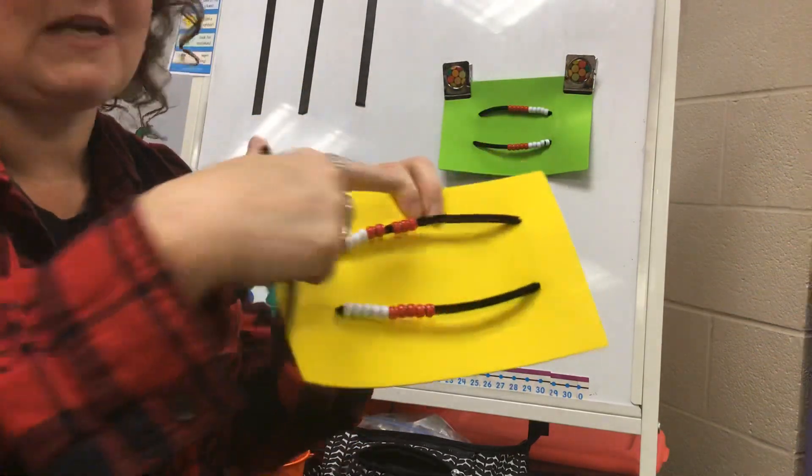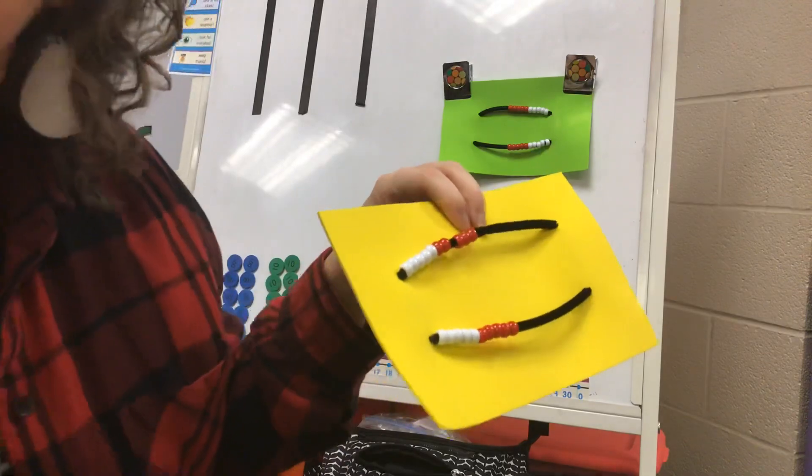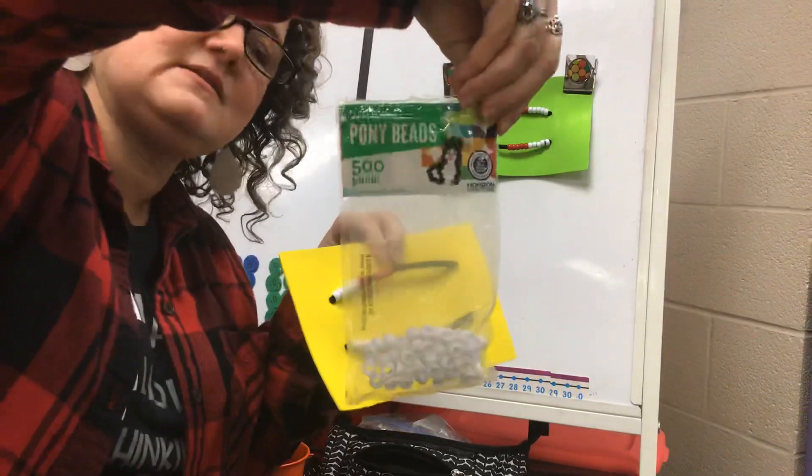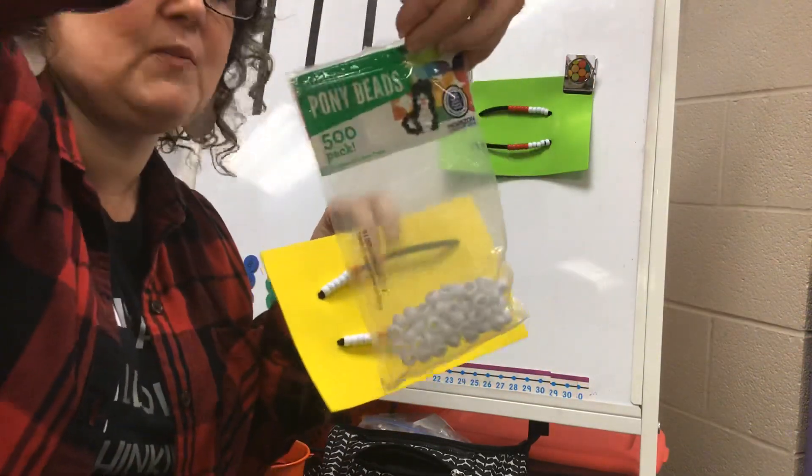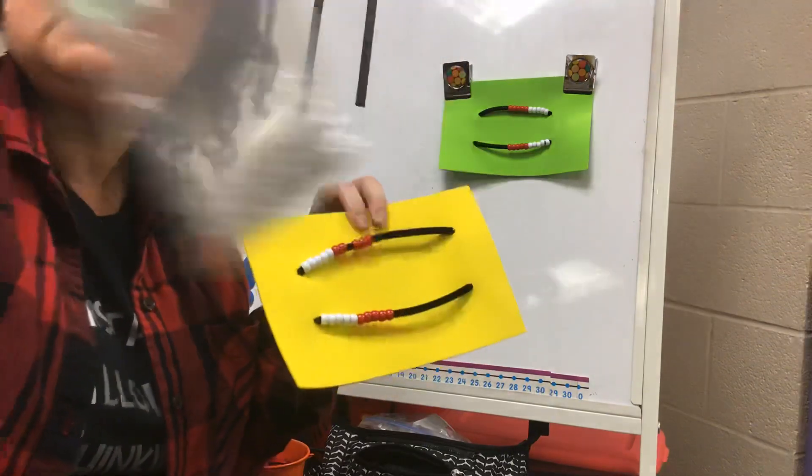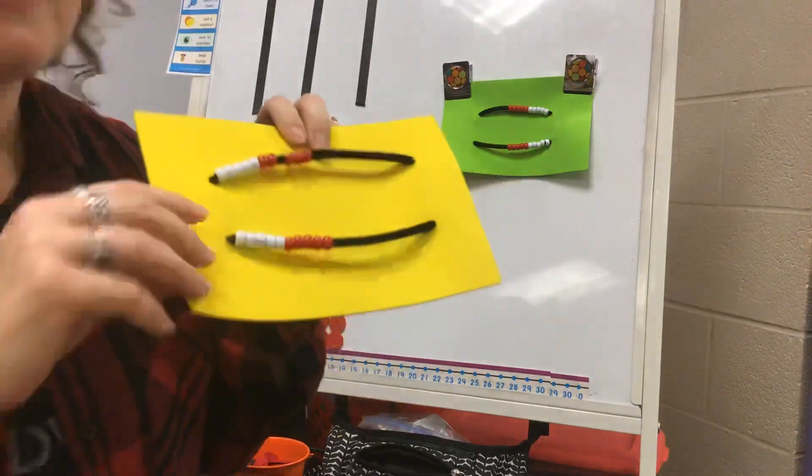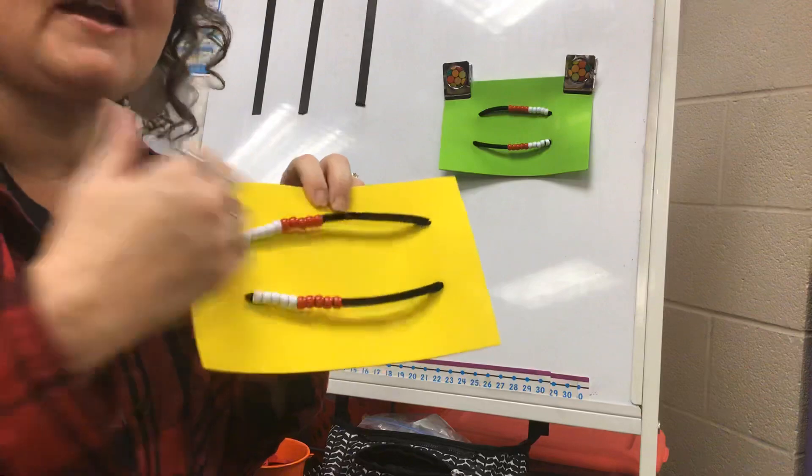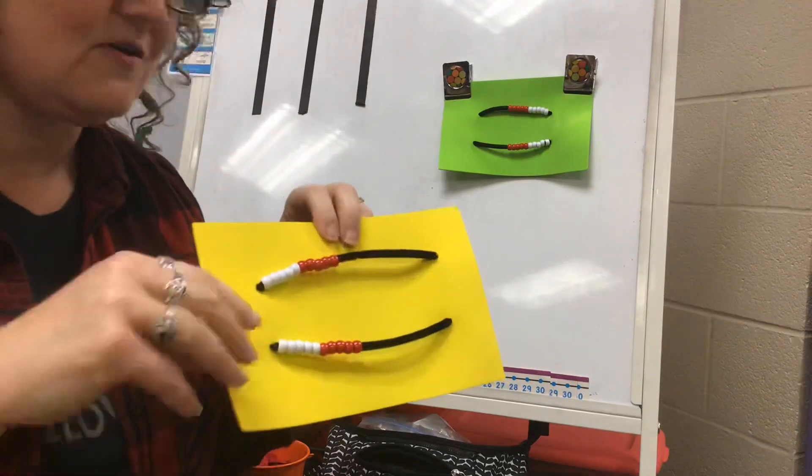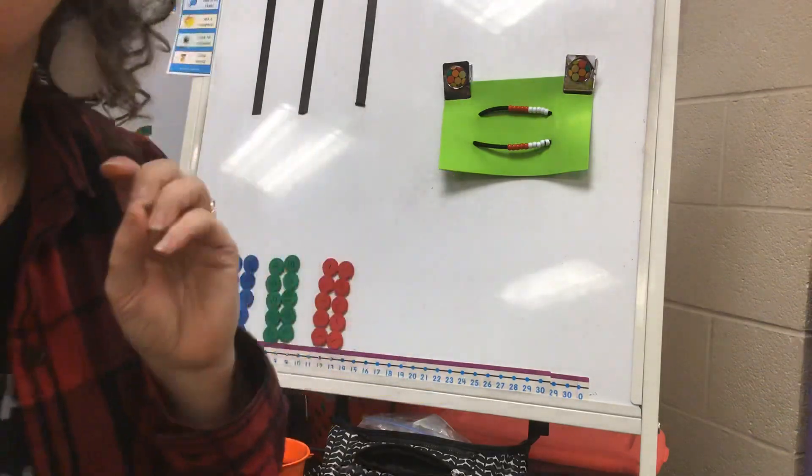Before I twisted them together on my pipe cleaners, I put red and white beads. They call these pony beads—they come in white and red and purple and blue and all kinds of colors. So you can use these beads to make your own Rekenrek, and these are great for counting or adding or subtracting. They're really awesome to use at home.